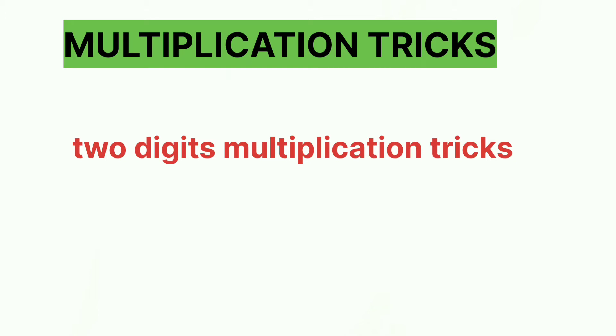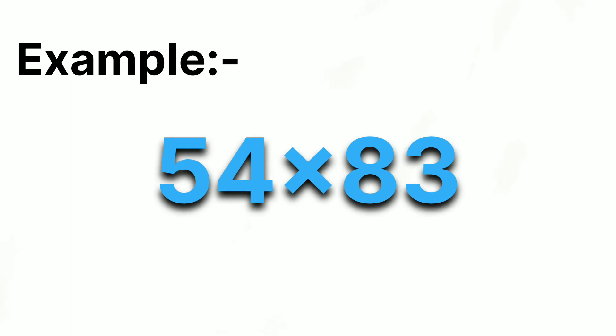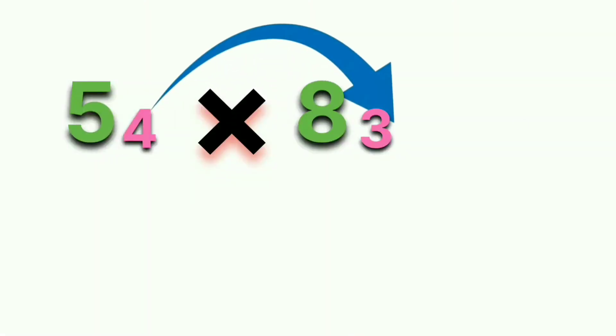Your multiplication will be 20% faster by today. If you like my video, then please subscribe my channel. So let's start. Example: 54 × 83. First you have to multiply 4 into 3, which equals 12.